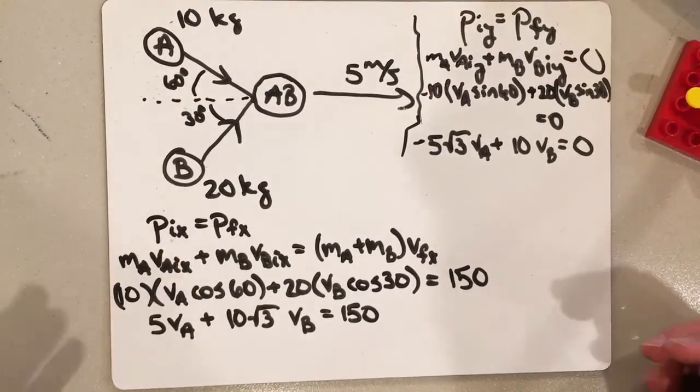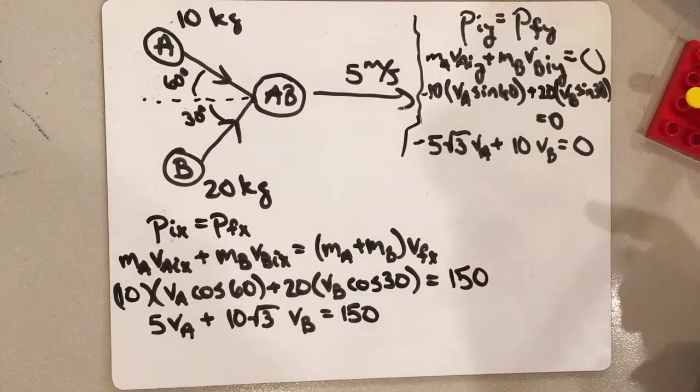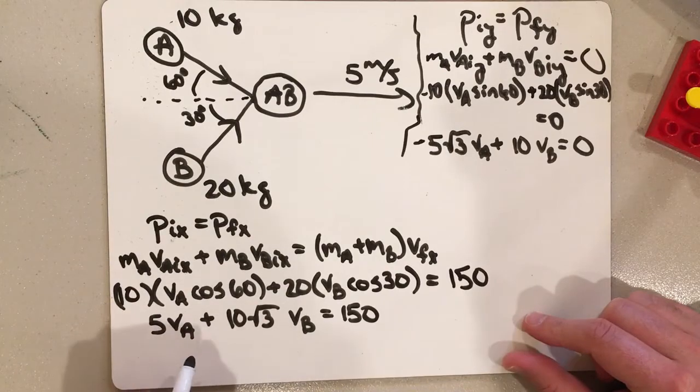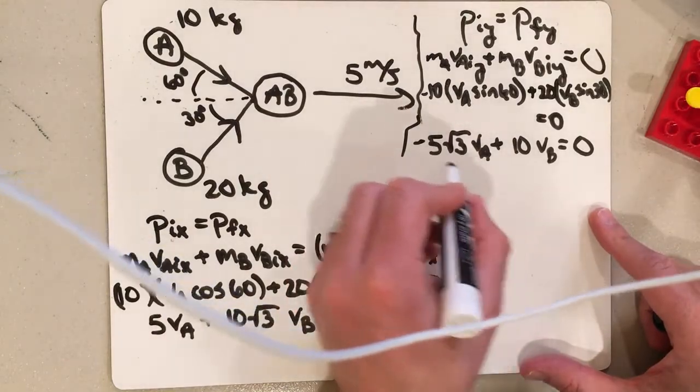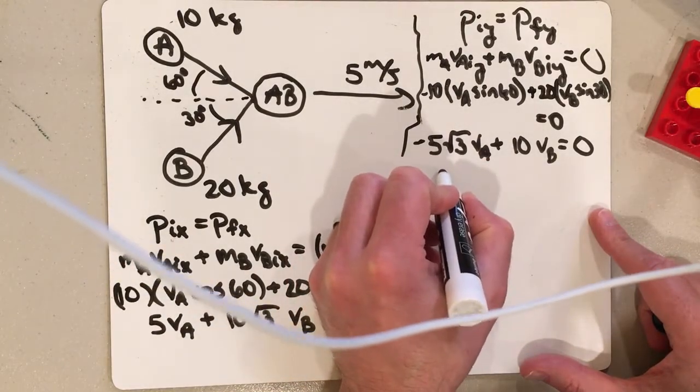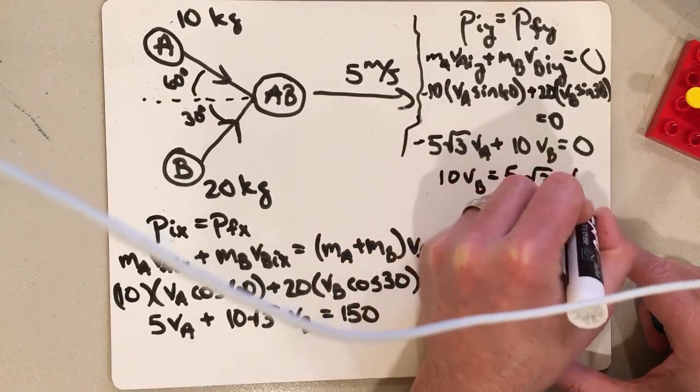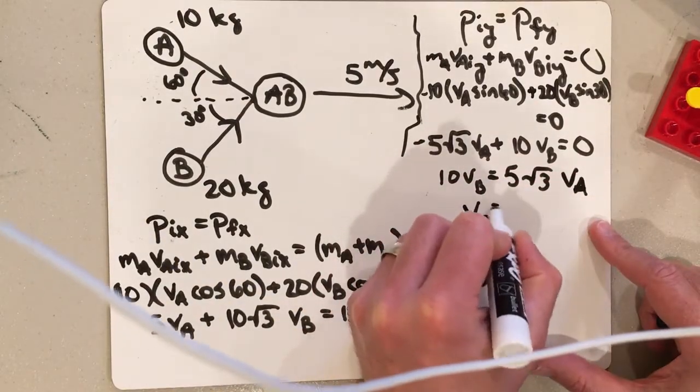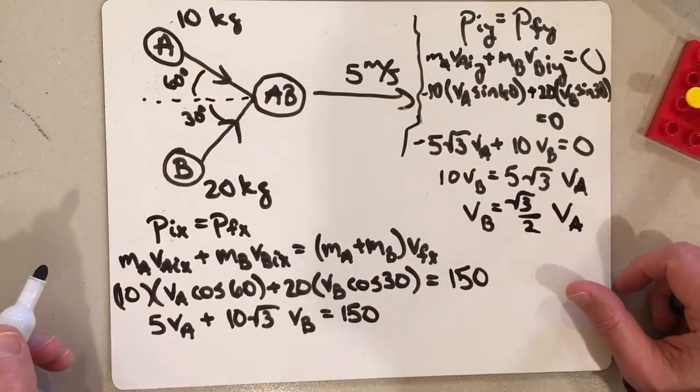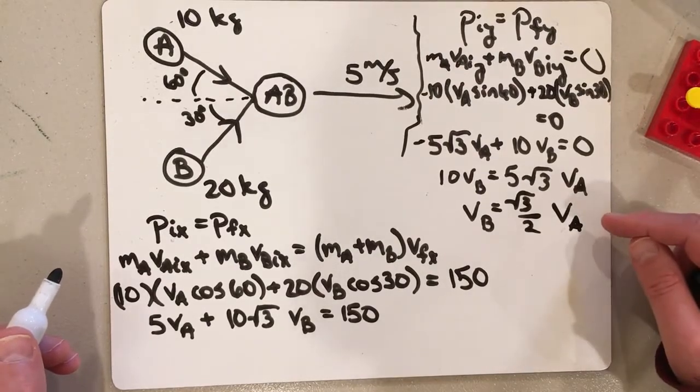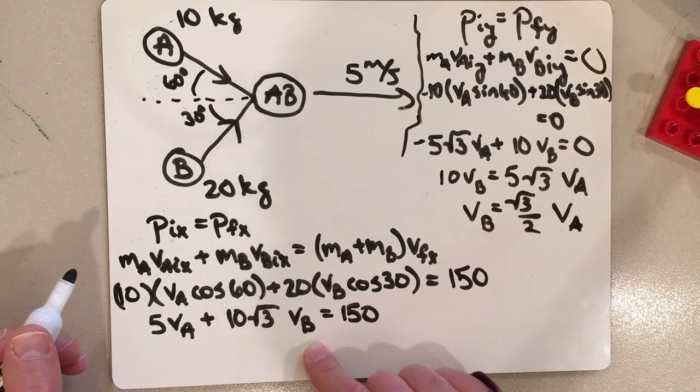And now, as I was saying, all we have to do is solve for one of the unknowns in terms of the other and then substitute it to get the answers. This would be the easier one to do. So we can easily solve for VB. We're going to have 10 VB equals 5 root 3 VA divided by 10, and VB is going to equal root 3 over 2 times VA.